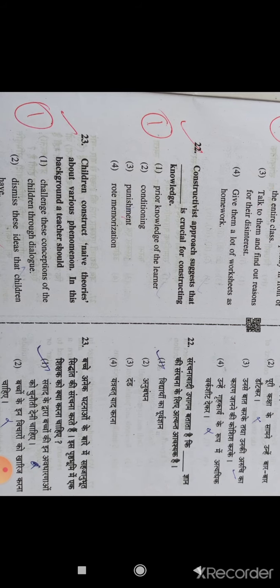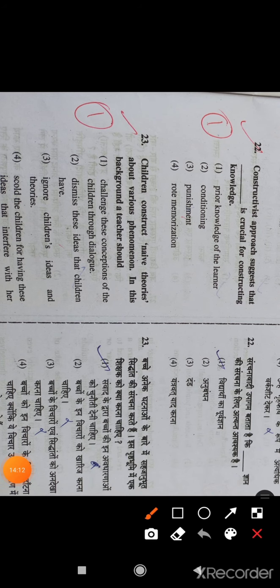Question number 22: Constructive approach suggests that prior knowledge of the learner is crucial for constructing knowledge. How much knowledge the student has, what they know about the concept, that is option A, the right answer.